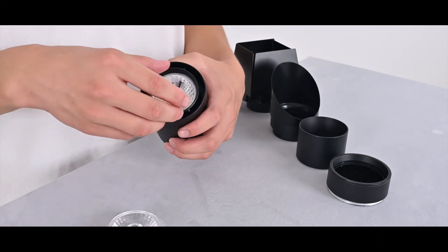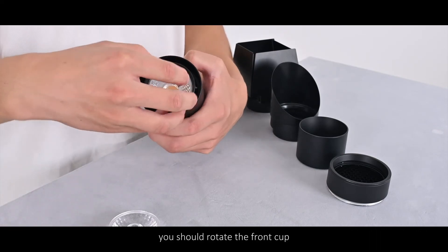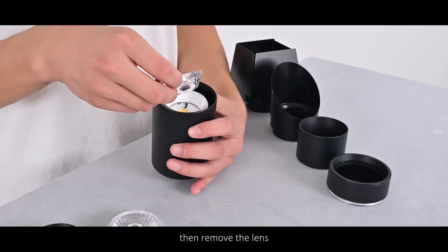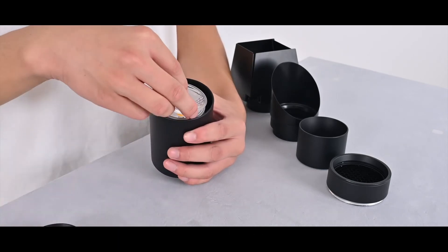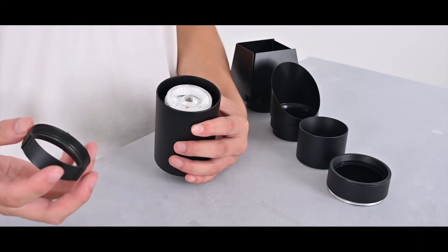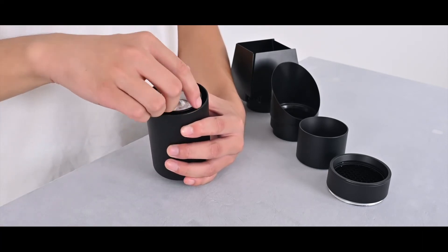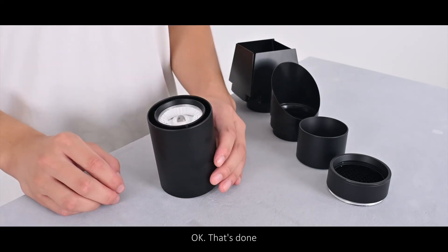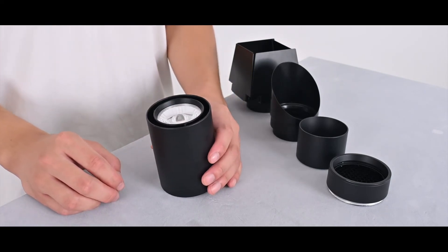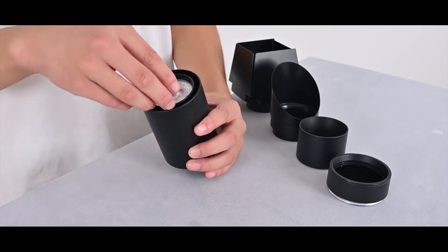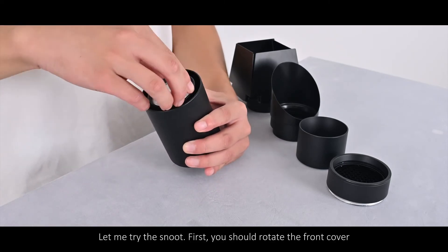First, you should rotate the in-front guard, then remove the lens and rotate the in-front guard. Okay, that's done. Now we can change the accessories, let me try the snoot.